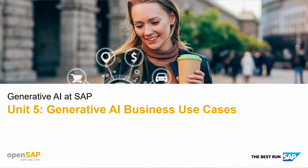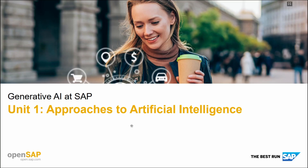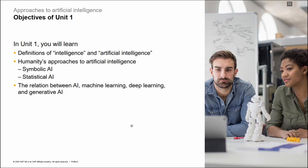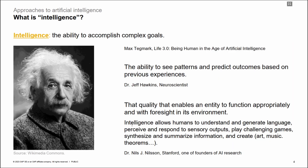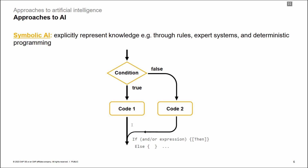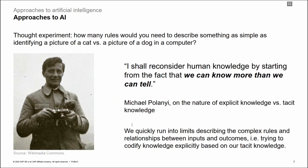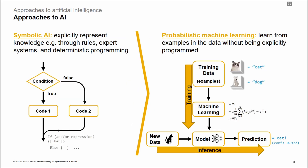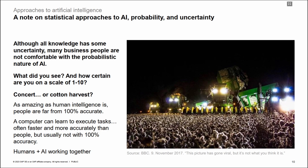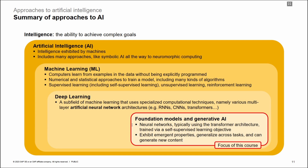Unit 1 — Approaches to Artificial Intelligence — delves into the foundational aspects of AI, providing learners with essential definitions and insights into humanity's approaches to AI. Participants will gain an understanding of key terms such as intelligence and artificial intelligence, along with exploring different historical approaches including symbolic AI and statistical AI. The unit also elucidates the relationship between AI and related concepts such as machine learning, deep learning, and generative AI.